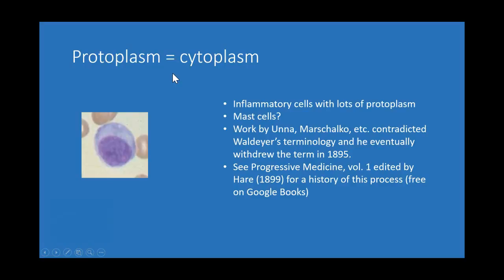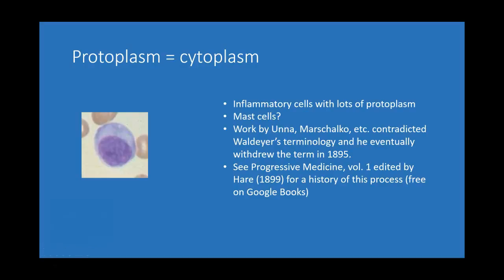The problem was that at this time, when people were just starting to examine these cells with new equipment, there were many researchers around the world working on the same concepts — including Una, Marshalko, and others — all discovering similar things and coming up with their own names. Sometimes multiple names existed for the same thing, or the same name was used for different things. Eventually it became clear that what Waldeyer was calling plasma cells was actually what some others were calling mast cells, and it was getting very confusing.